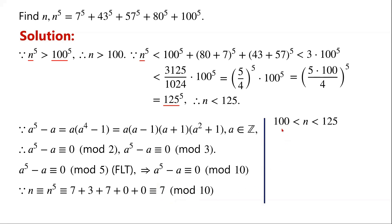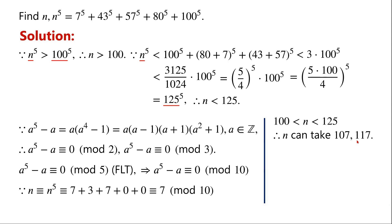Since 100 is less than n which is less than 125, and the last digit of n is 7, n can take the values 107 or 117.